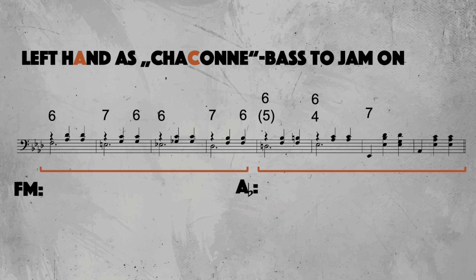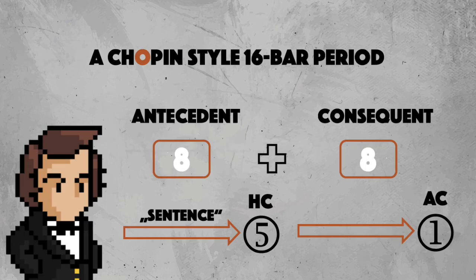For my own experimentation, I modified this bassline in a way that it would resemble more the 16-bar period with the antecedent as a sentence, and focus more on the key of F minor. And from that I created my own stuff. Here is one version that I was really pleased with.